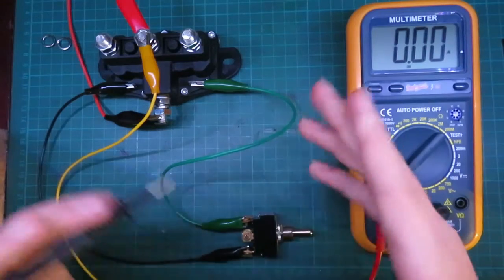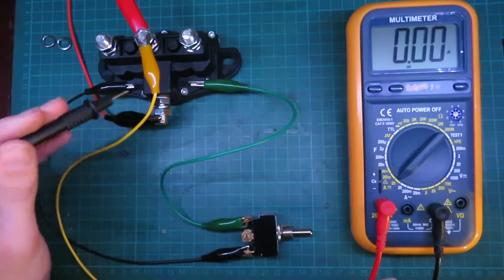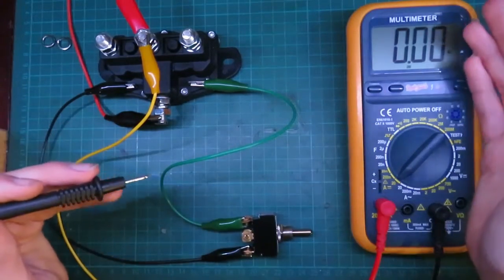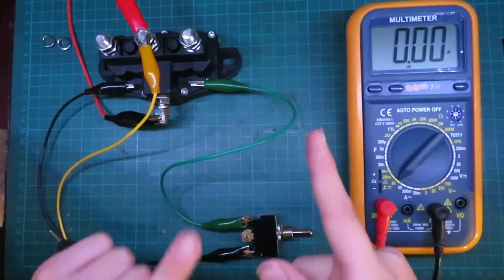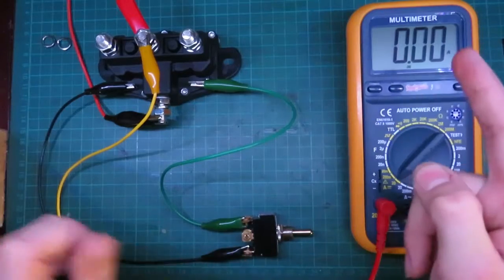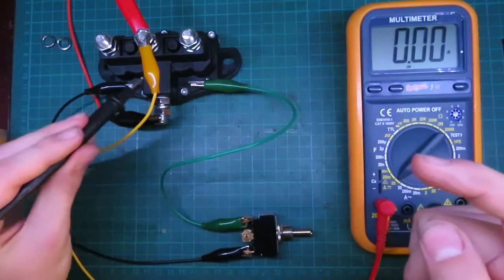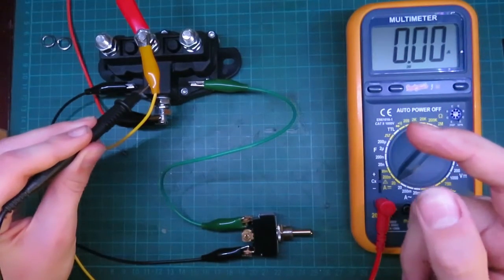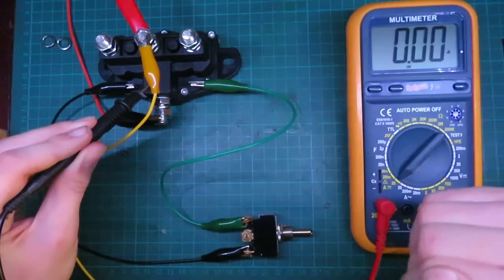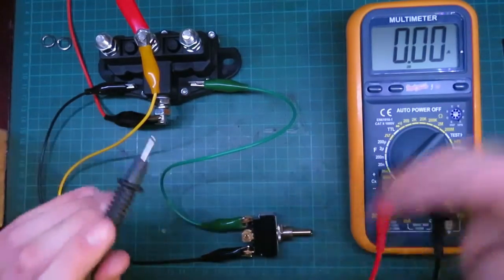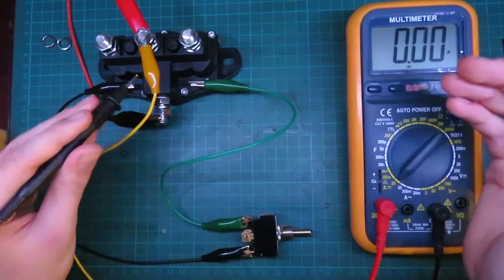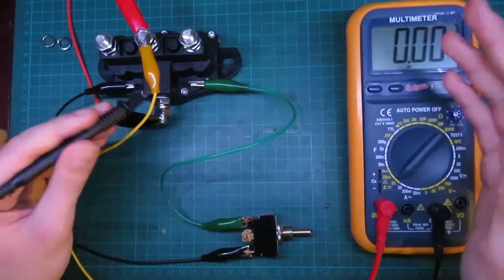You might be wondering why one way draws more current than the other way. Well, there's two coils in here pulling the solenoid either the one way or the other way. One coil might have to do slightly more work in order to pull over. Maybe one coil has a little bit less resistance than the other coil, so it can draw more current. I'm not really sure, but it's probably one of the two reasons there.